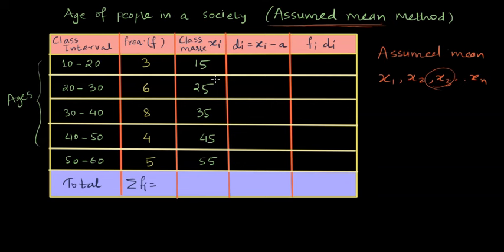So here the class marks are 15, 25, 35, 45 and 55. We can choose our assumed mean to be 35 here. So here we are assuming that our assumed mean is 35.